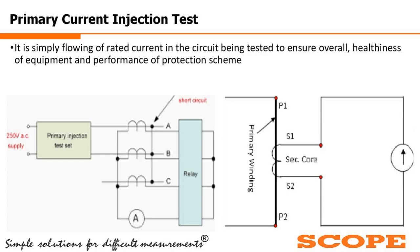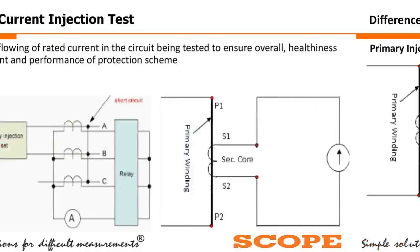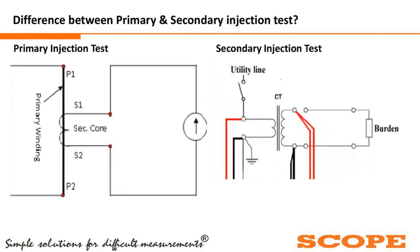The difference between primary and secondary current injection: in the primary current injection test, we directly inject a rated current from the primary side of the current transformer and accordingly check how much current is flowing from the secondary side. CTs are designed for one ampere or five ampere secondary current, so after injection of the primary rated current we check whether the secondary current is one ampere or five ampere only. This is the direct method to check the behavior of the primary and secondary current.